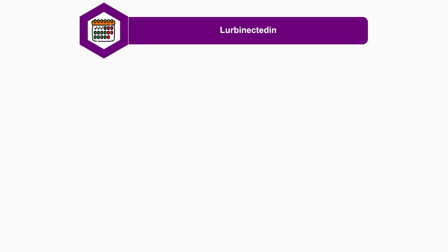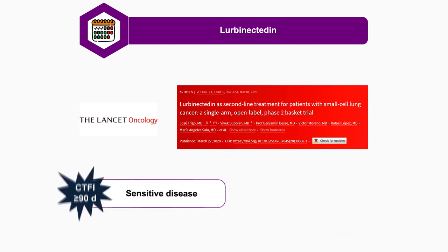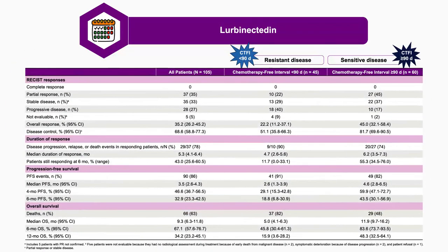Tumor-associated macrophages can lead to tumor proliferation and growth through increasing angiogenesis, suppressing the local immune system, and increasing matrix remodeling. By inducing apoptosis of tumor-associated macrophages, lurbinectedin stops these tumor proliferation mechanisms. The FDA approval for lurbinectedin comes from a basket study reported by Trigo et al., a single-arm phase 2 study in second-line small cell lung cancer. Sensitive disease was defined as a chemotherapy-free interval of ≥90 days and resistant disease as <90 days. Among all patients, 35% experienced a partial response and 33% experienced stable disease. Partial response was 22% in resistant disease and 45% in sensitive disease. Median duration of response among all patients was 5.3 months, with 43% still responding at 6 months.